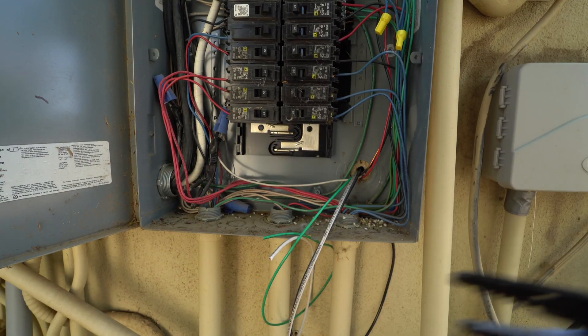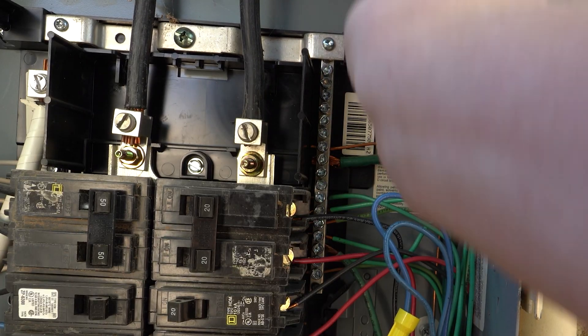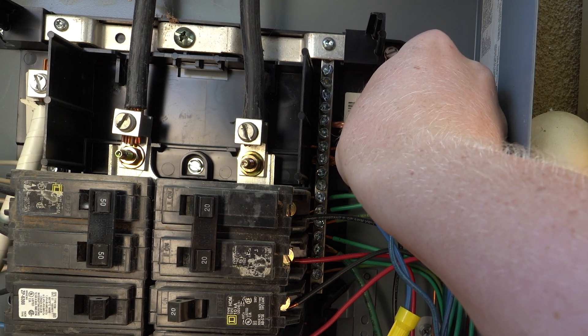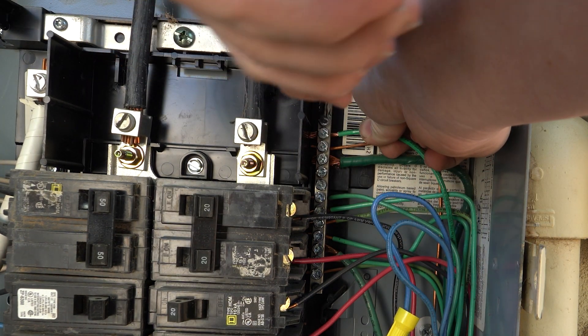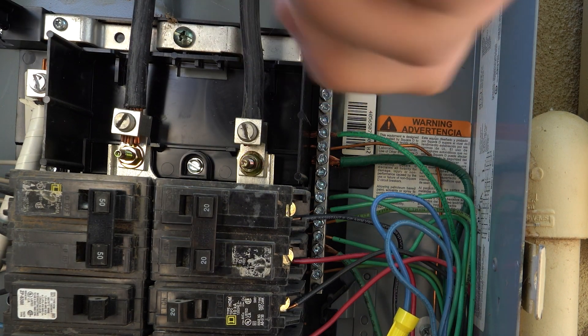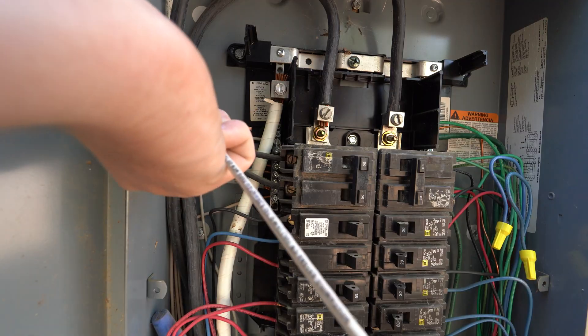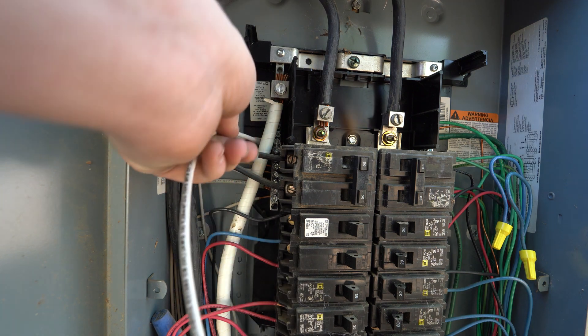Once the wires are ran into the electrical box, cut them to length. Locate the grounding bar, which will likely have green or copper wires already in it. Loosen a screw and add in the green wire from your electrical outlet. Now install the neutral wire into the neutral bus bar.